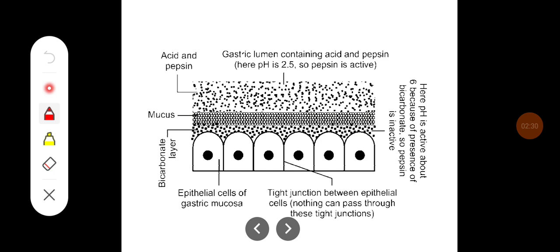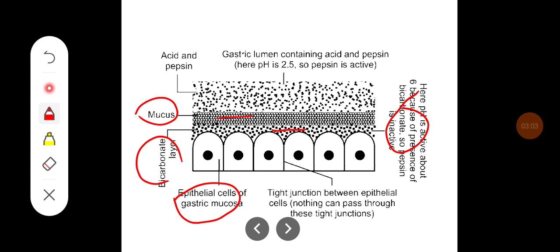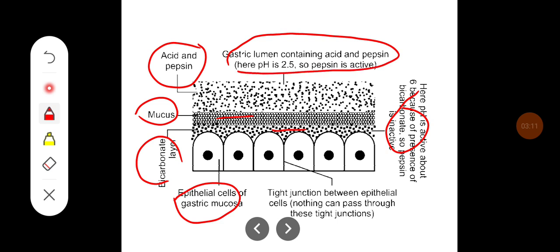This is the diagram showing the mucosal barrier. This is the epithelial layer of the gastric mucosa. This layer has a pH of about 6 because of the presence of bicarbonate, and pepsin is inactive in this layer, which is called the bicarbonate layer. Then there is a mucus layer, followed by an acid and pepsin mixture, and above that is the gastric lumen containing acid and pepsin. Here the pH is around 2.5 and pepsin is very active. The epithelial cells form tight junctions between them, and nothing can pass through these tight junctions.